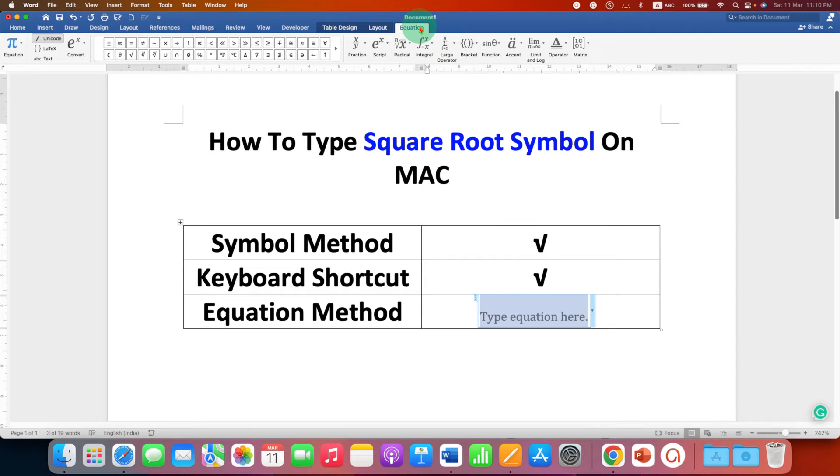Now under the Equation tab, click on Radical and you will see the extended square root symbol. Just click on this symbol and in the empty box type whatever you want.